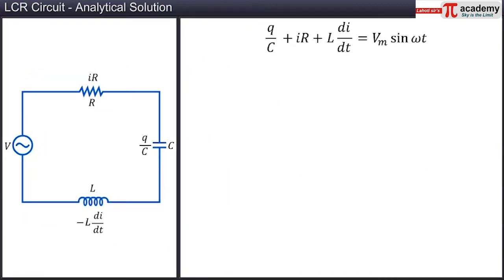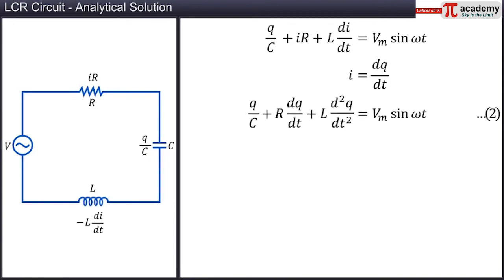We know that the instantaneous current I is equal to dQ/dt. Hence, we get Q/C + R dI/dt + L d²Q/dt² equal to Vm sin omega T. Let this be equation 2.